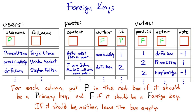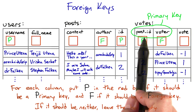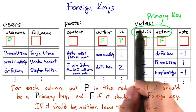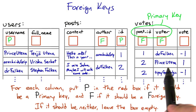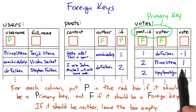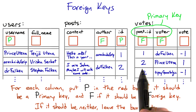But one more thing. Since each user should only be allowed to vote once on each post, the pair of columns post_id and voter in the votes table should also be a primary key — for instance, user printSutena's vote on post ID number two.